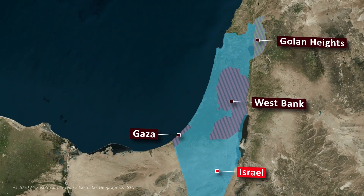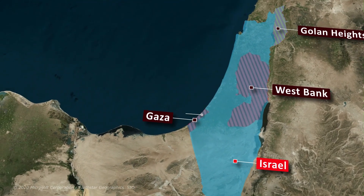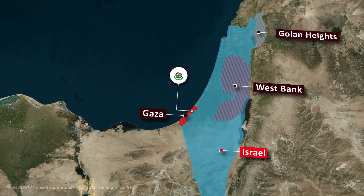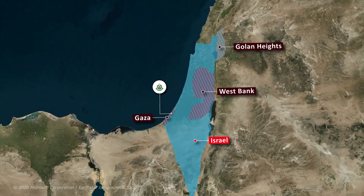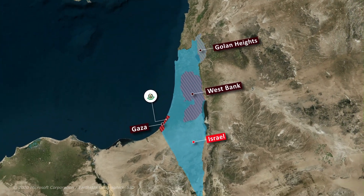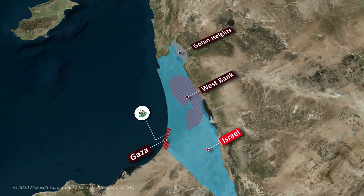In the late 1980s, the group Hamas was formed as frustration in Gaza was at its highest. Although Israel withdrew from Gaza in 2005, it continues to occupy the West Bank.